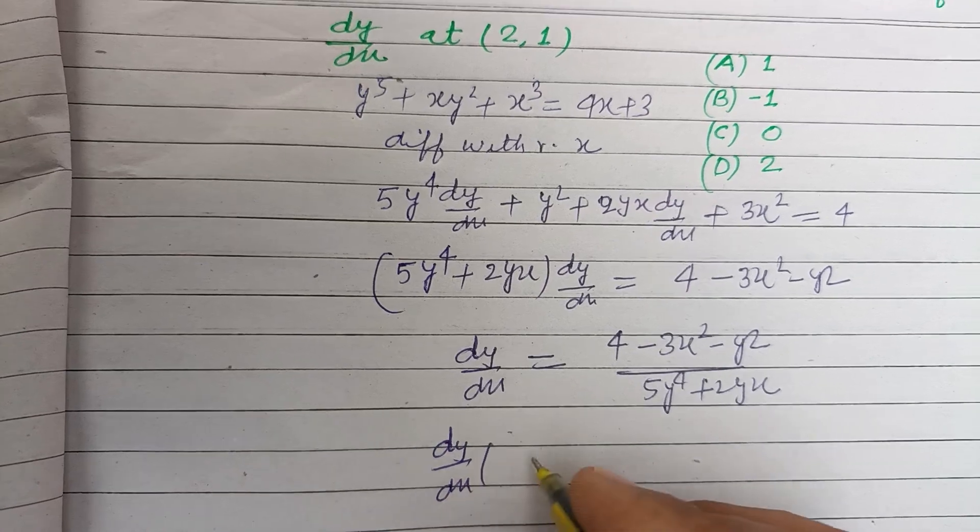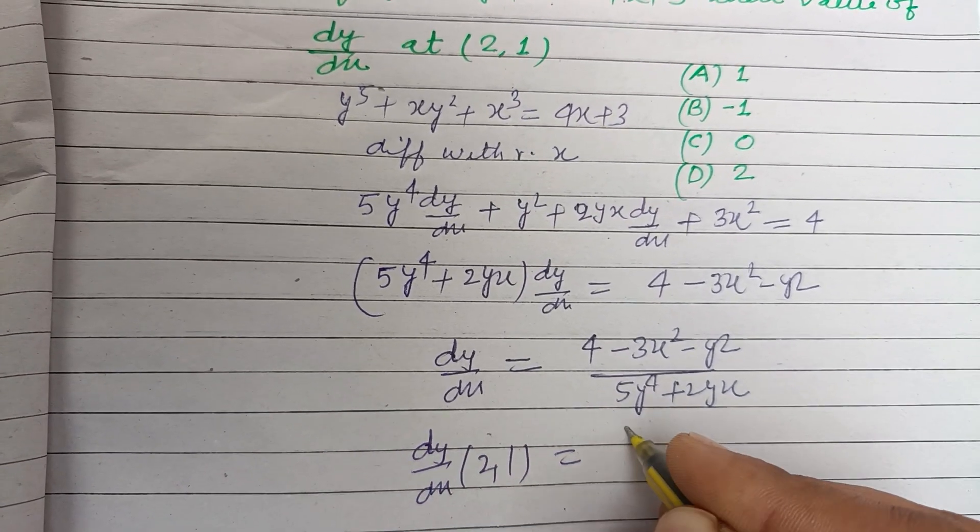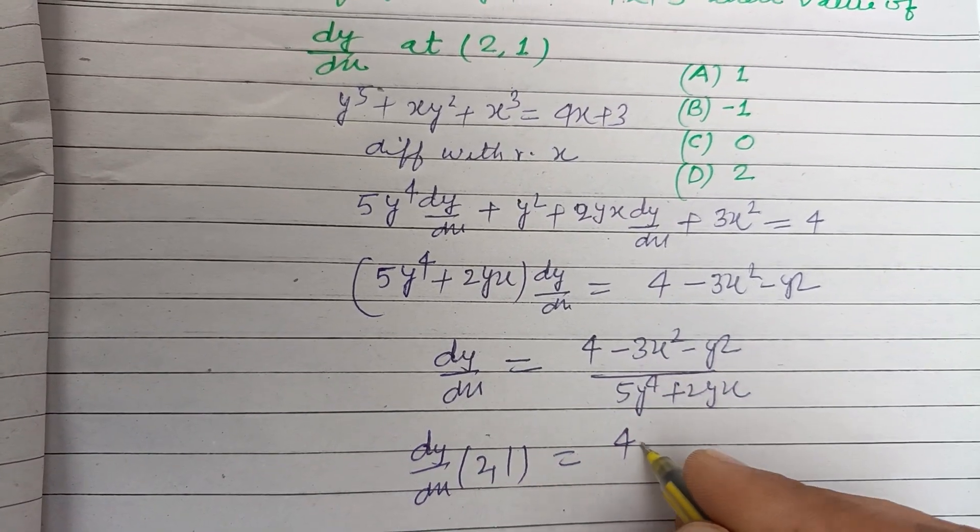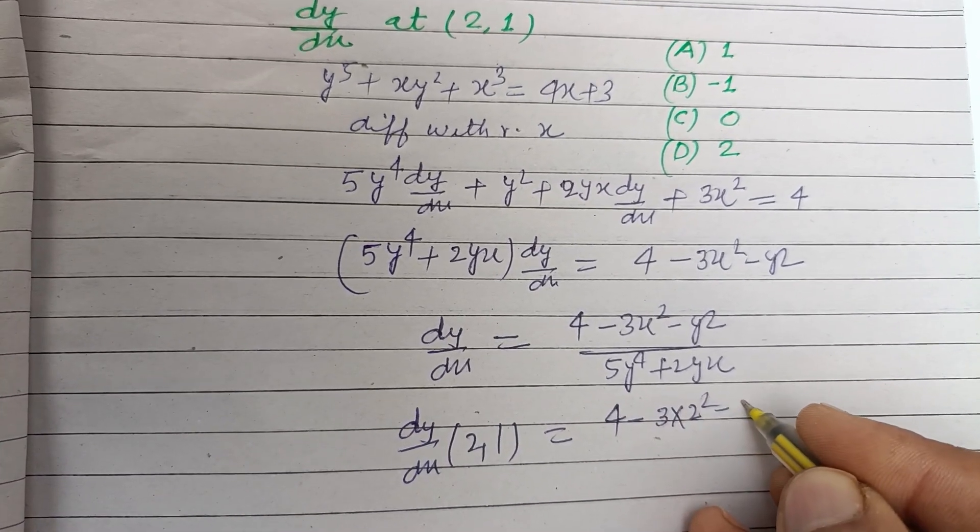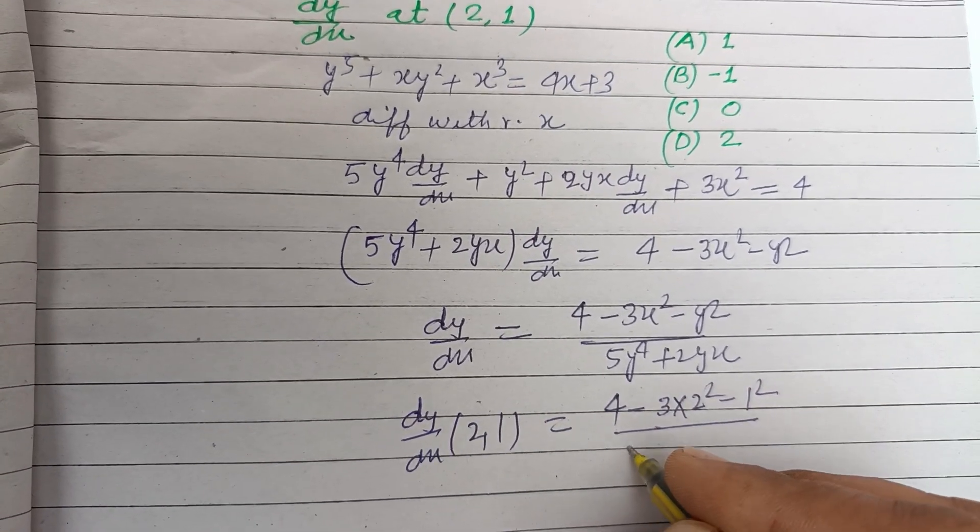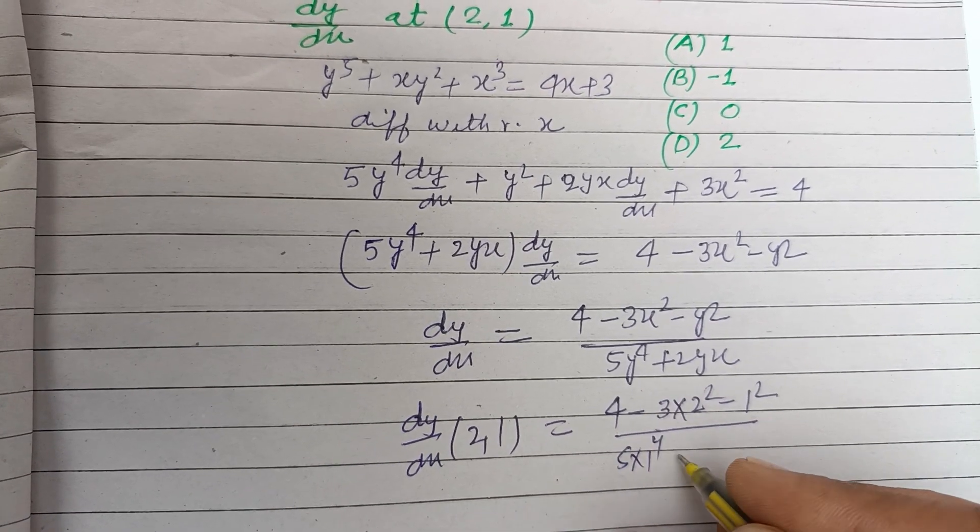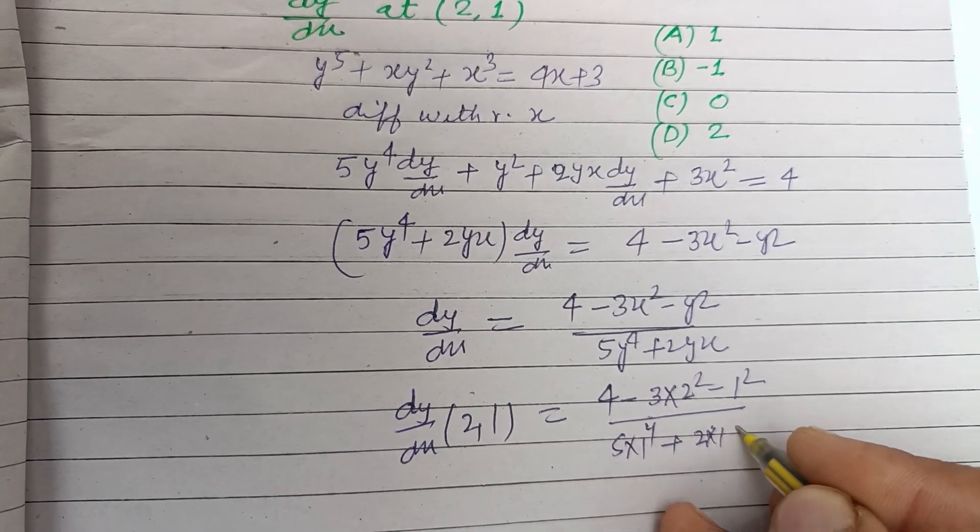dy by dx at (2, 1): putting value of x which is 2, so 4 minus 3 into 2 square minus 1 square upon 5 times 1 to the power 4 plus 2 times 1 into 2.